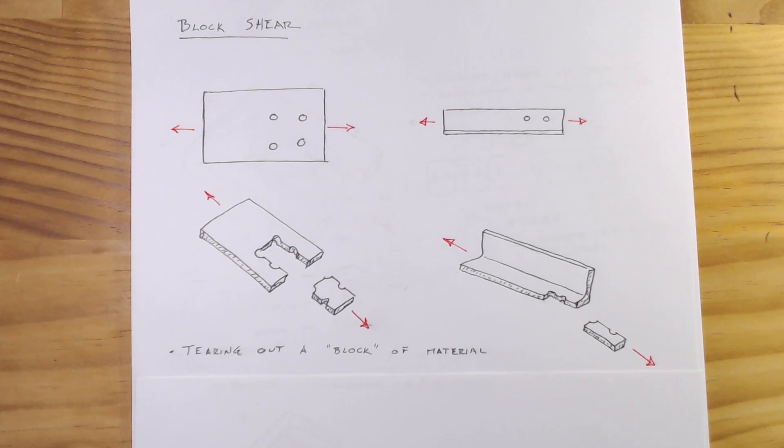In this video, we're going to discuss block shear, which is the final failure mode we will be considering when doing a tension design of a steel member based on the New Zealand design standard NZS 3404.